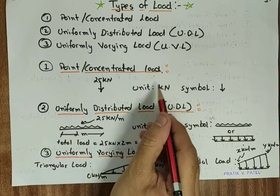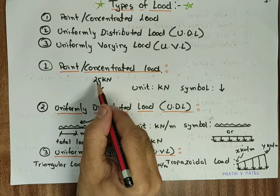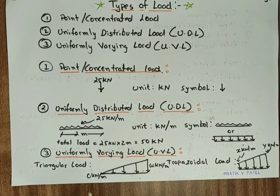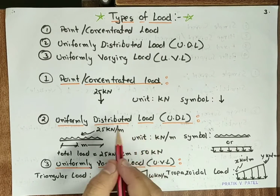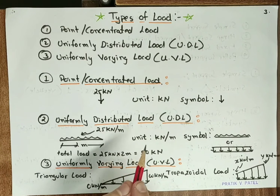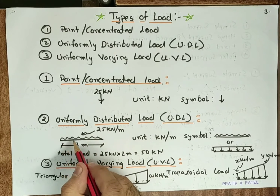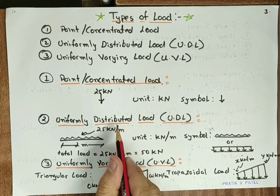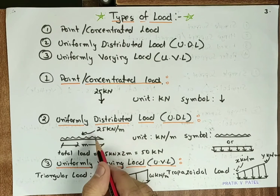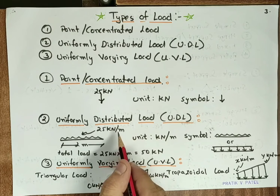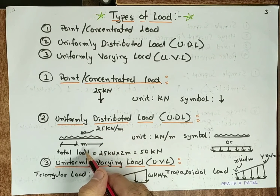The unit of the concentrated load is kN. Here is an example of a point load given as 25 kN. If we talk about uniformly distributed load, it is a load which is spread over the beam such that each unit length of the beam is loaded to the same intensity — this load is spread over the beam in its entire span. Its unit will be kN per meter. Here is an example where I have given 25 kN per meter and the length of the beam is 2 meters, so the total load coming from the top is 25 × 2 = 50 kN.